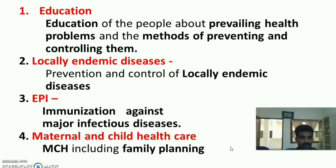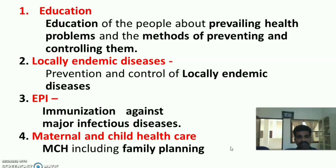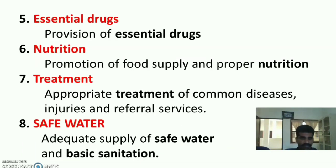The third element is Expanded Program on Immunization — that means immunization against the major infectious diseases. The fourth element is Maternal and Child Health care, that is maternal and child health including family planning, also referred to as MCH services. It has now been replaced with RCH services, including family planning.